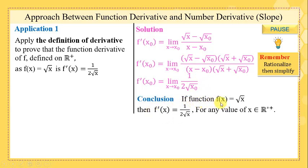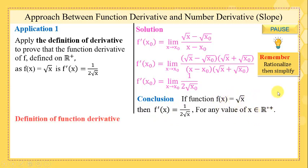So we can now conclude that if the function f(x) = √x, then its derivative function equals 1/(2√x) for any value of x in the domain of f(x). Now, the definition of the function derivative.